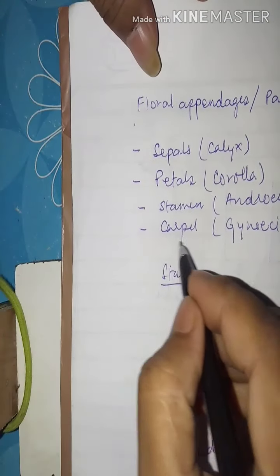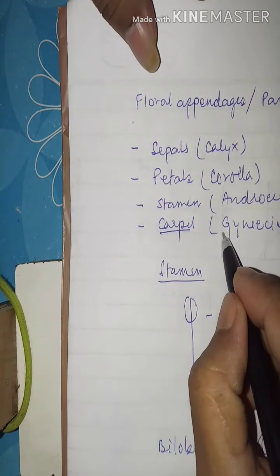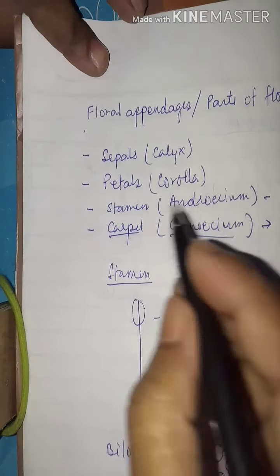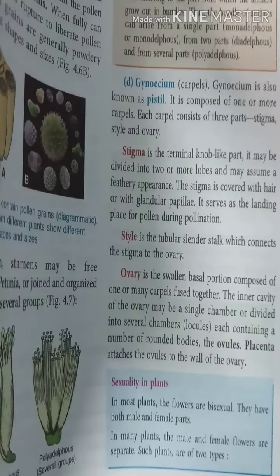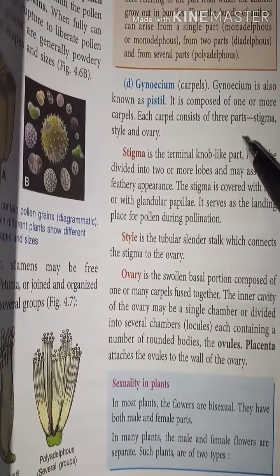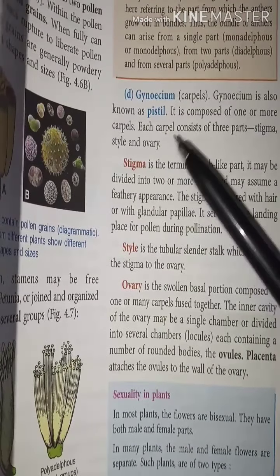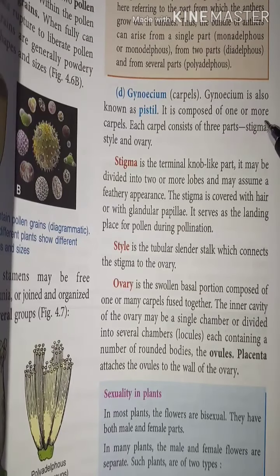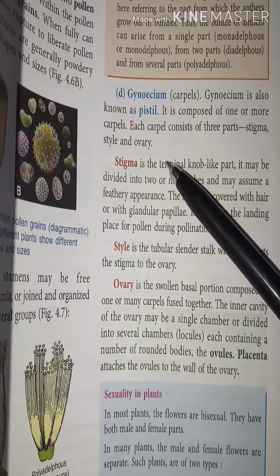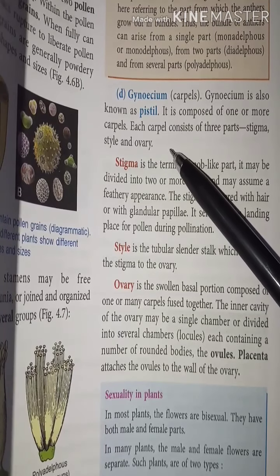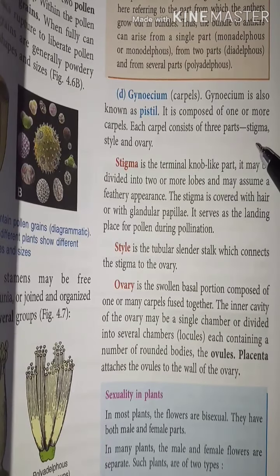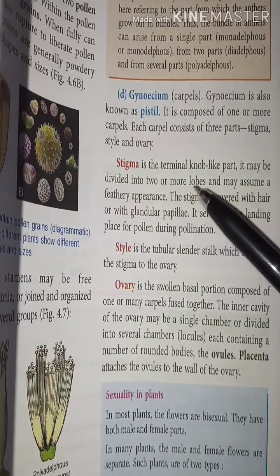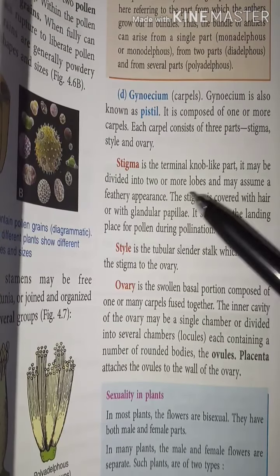Now we come to the last part — the carpel, collectively known as gynoecium. This is the female part. Gynoecium is also known as the pistil. It is composed of one or more carpels, and each carpel consists of three parts: stigma, style, and ovary.